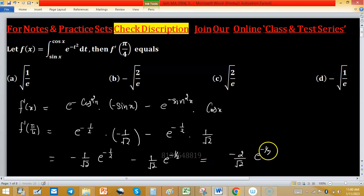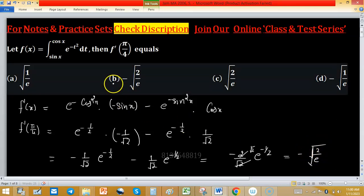The √2 cancels out, so we have -√2 times e^(-1/2), or -√2/e^(1/2). So option B is correct.